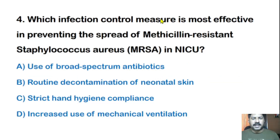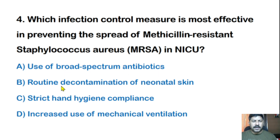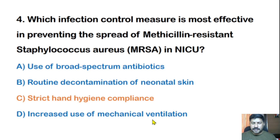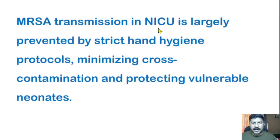Fourth question: Which infection control measure is most effective in preventing the spread of MRSA in the neonatal ICU? Options: use of broad spectrum antibiotics, routine decontamination of neonatal skin, strict hand hygiene compliance, or increased use of mechanical ventilation. The correct answer is strict hand hygiene compliance. MRSA in the neonatal ICU is largely prevented by strict hand hygiene protocols, minimizing cross contamination and protecting vulnerable neonates.